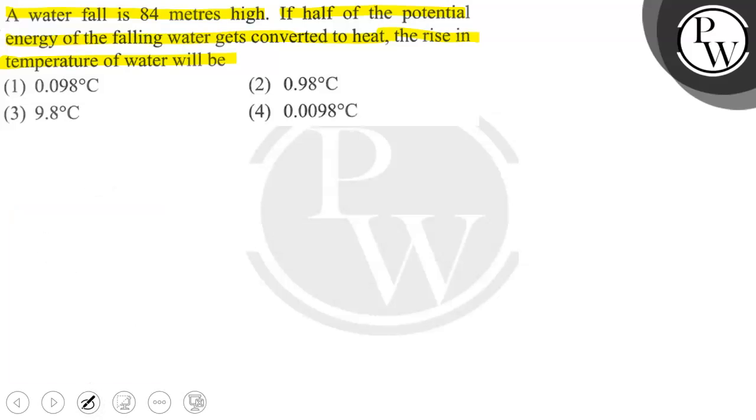If the waterfall is 84 meters high, and half of the potential energy of the falling water gets converted to heat or to rise in temperature of water, first of all, let the mass of falling water be m kg.